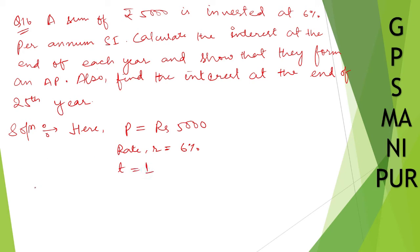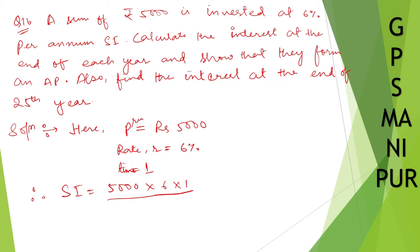I hope you know how to calculate simple interest. Simple interest is equal to principal into rate into time divided by 100 — that is 5,000 into 6 into 1 divided by 100. Cancelling zeros, we get 300. So, simple interest at the end of each year — the first year is 300.